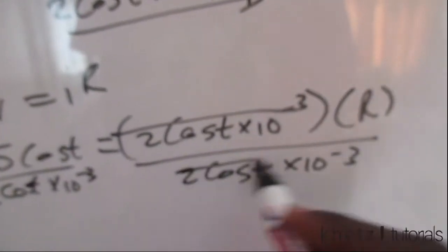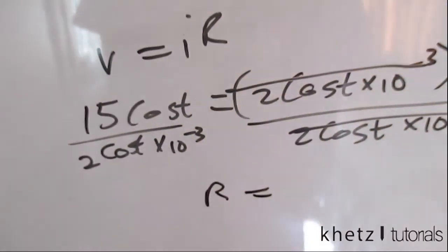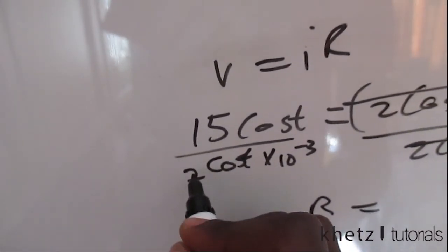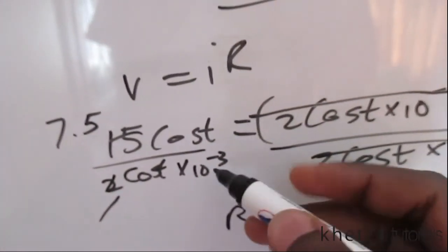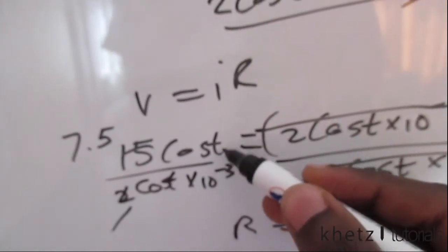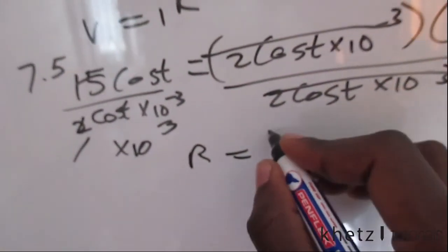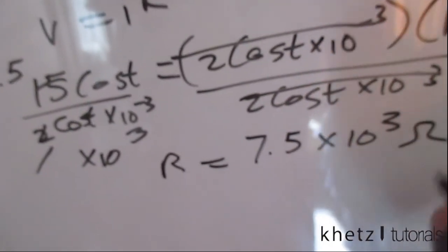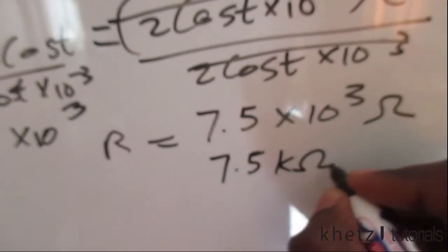That cancels out, we're left with R equals, doing this we can say that is 7.5. Now if we take this 10 to the minus 3 up, which is what you do when you divide like this, it becomes times 10 to the 3. So your answer will be 7.5 times 10 to the 3 ohms, which is equivalent to 7.5 kilo ohms.